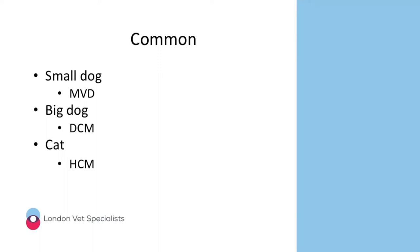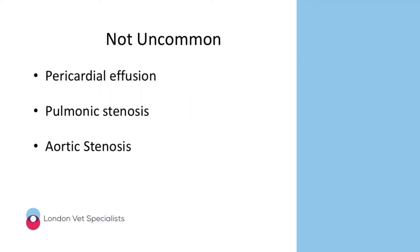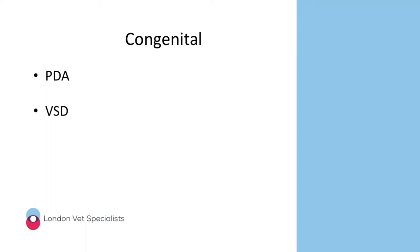Occasionally we'll see other types of heart disease in first opinion practice: pericardial effusions, pulmonic stenosis and aortic stenosis. And finally we'll talk briefly about common types of congenital heart disease — PDAs and VSDs.